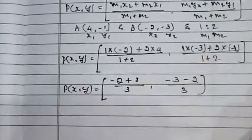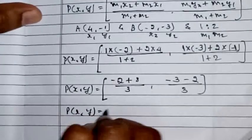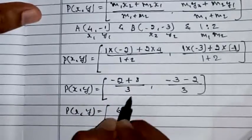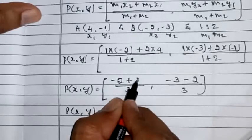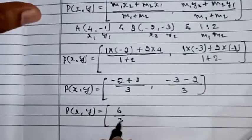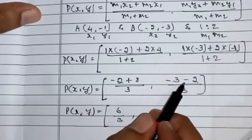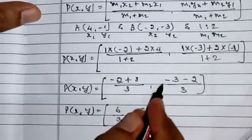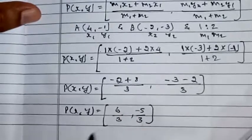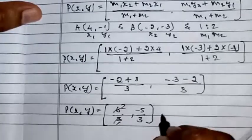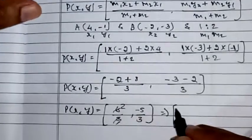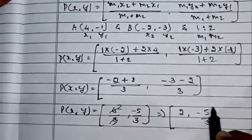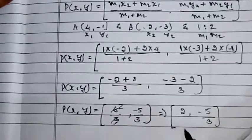So P(x, y) = (6/3, -5/3) = (2, -5/3). This is the coordinate of point P.